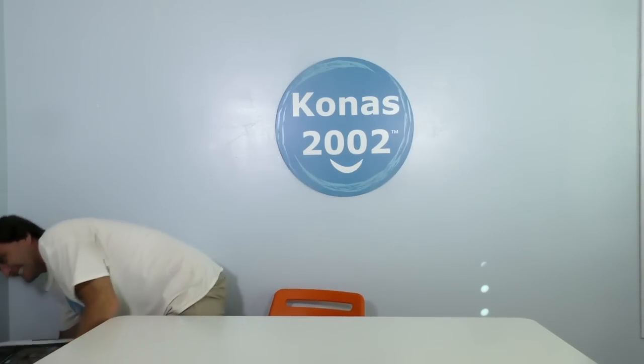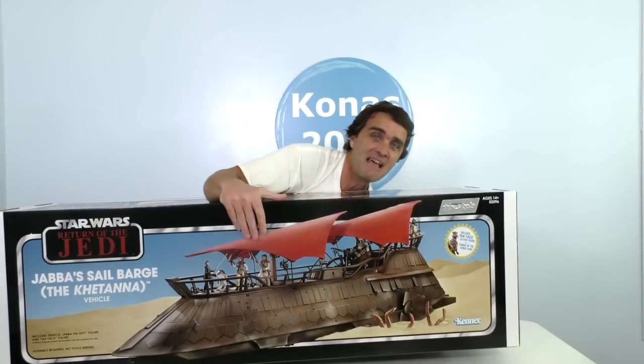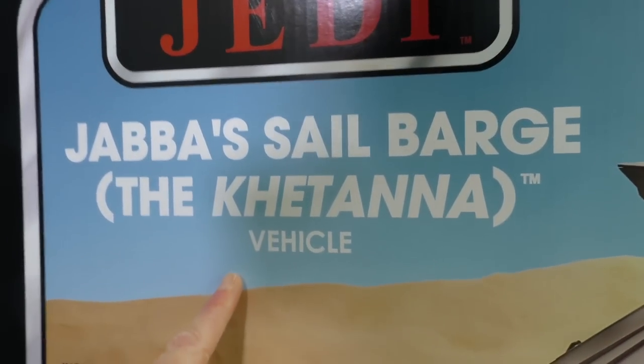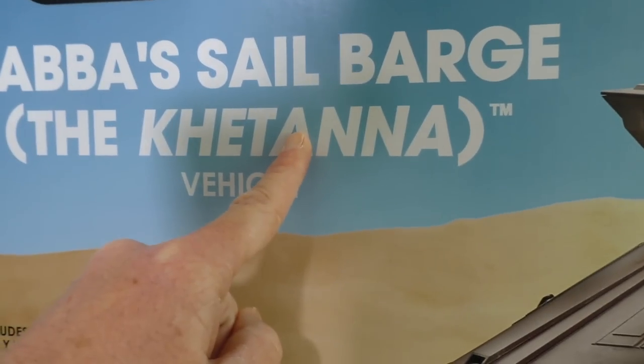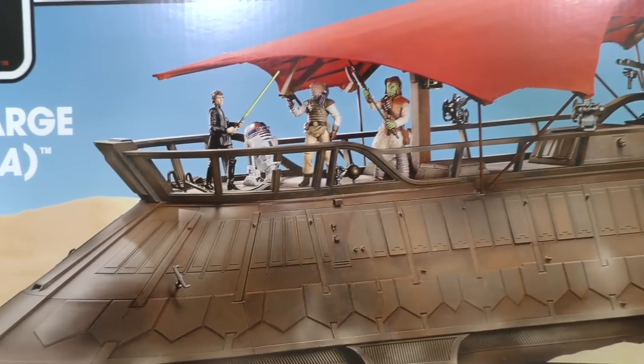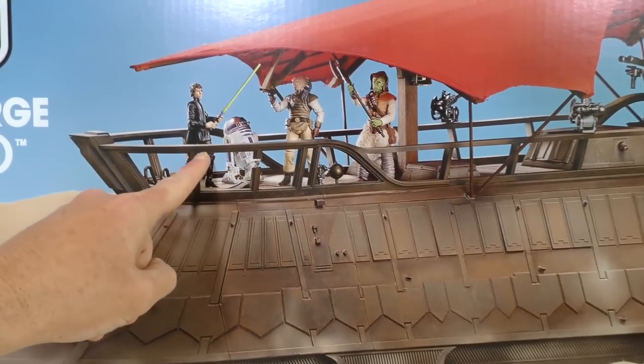Well, now there is with Jabba's sail barge. See? Star Wars Return of the Jedi Jabba's sail barge, or as Jabba likes to call it, the Khetanna. It's a super cool, super big party ship that Jabba likes to drive around in the desert to throw people off of into the Sarlacc pit and just have parties.